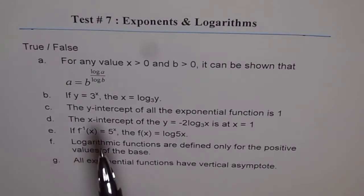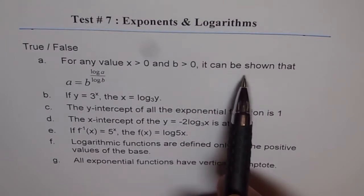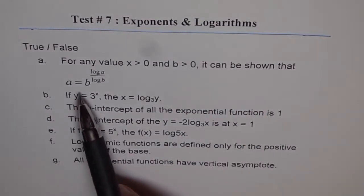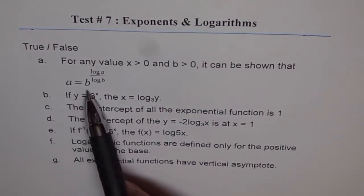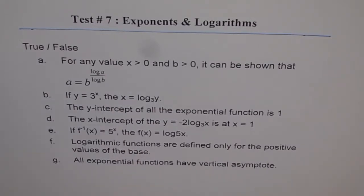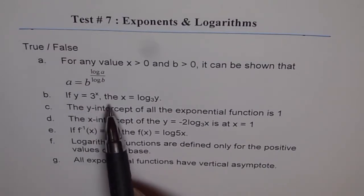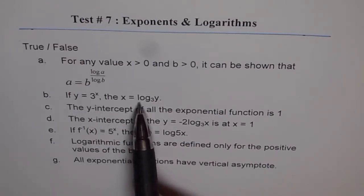Question 1, for any value x greater than 0 and b greater than 0, it can be shown that a equals b to the power of log a over log b. If y equals 3 to the power of x, then x equals log to the base 3 of y.